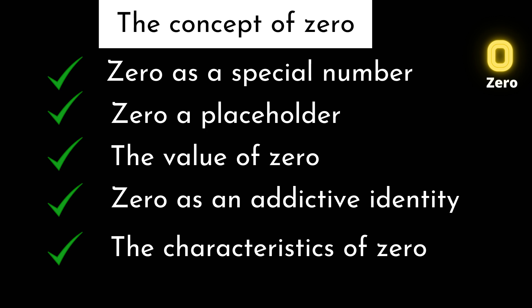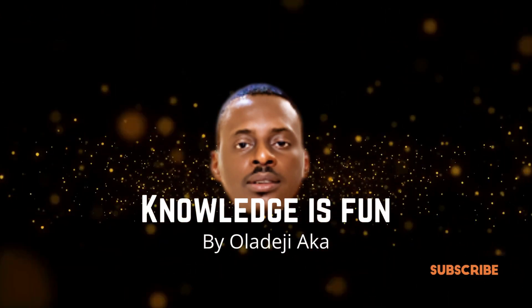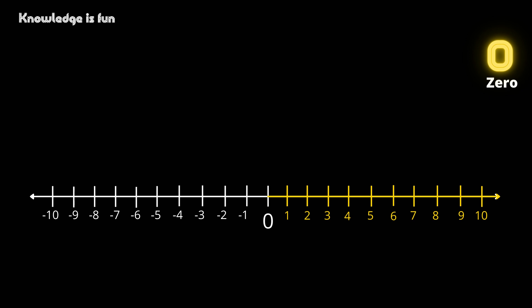Zero is a very special number. Now take a look at this number line. This number line has two sets of numbers: the positive numbers and the negative numbers. Zero, being the origin of numbers, is the halfway between minus one and plus one on the number line. Zero is neither a negative number nor a positive number, but it is an even number.